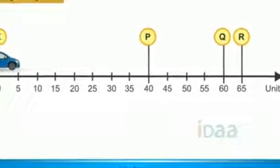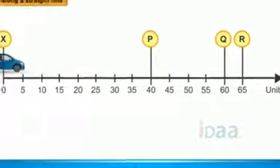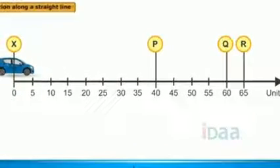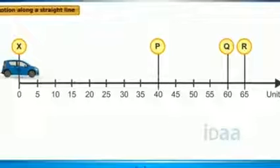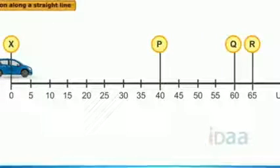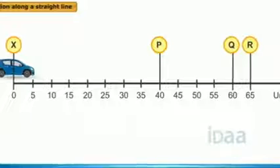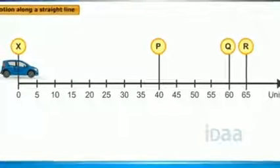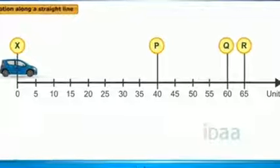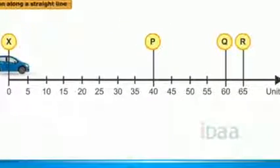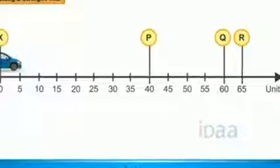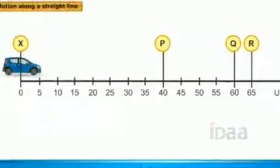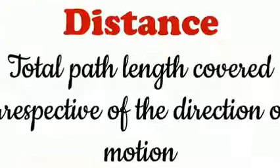Now we will understand motion along a straight line. Consider a car moving from X, then it moves to R, then to Q, and then back to P. The total distance traveled by the car, or path length, is: 40 units from X to P, 20 units from P to Q, 5 units from Q to R, and 25 units from R to P — a total of 90 units.